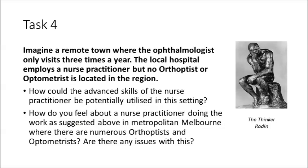Task 4 is a reflective task. Imagine a remote town where the ophthalmologist only visits three times a year. The local hospital employs a nurse practitioner, but no orthoptist or optometrist is located in the region — and this is actually a reality for a lot of places around Australia. How could the advanced skills of the nurse practitioner be potentially utilised in this setting? And secondly, how do you feel about a nurse practitioner doing that same work in metropolitan Melbourne, where there are numerous orthoptists and optometrists? Are there any issues with this?